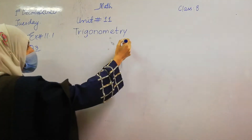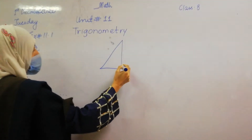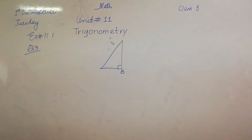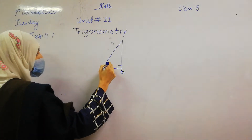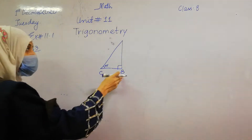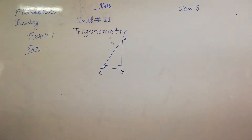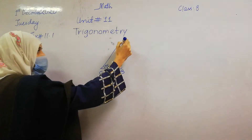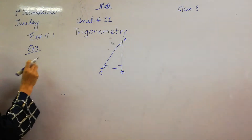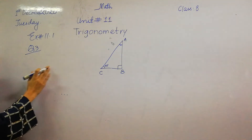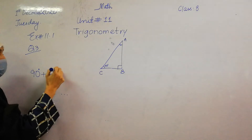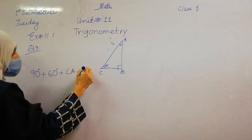We have a triangle with a right angle at point B. The measurement of angle C is 60 degrees. This is C, this is B, and obviously this point is A. We know that the sum of all three angles of a triangle is equal to 180 degrees, so 90 degrees plus 60 degrees plus angle A equals 180 degrees.